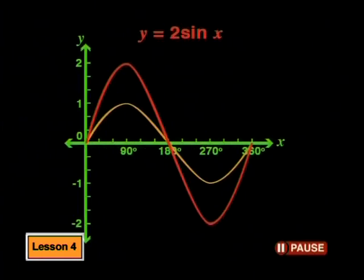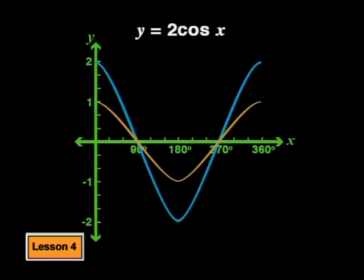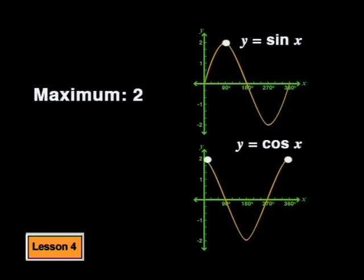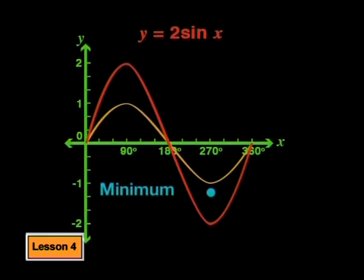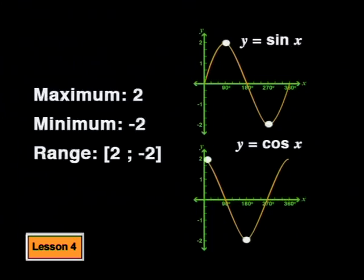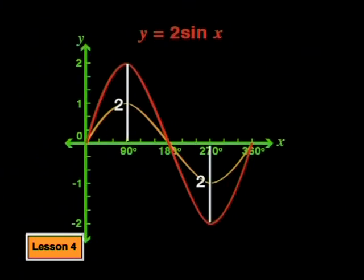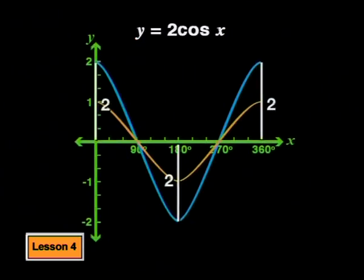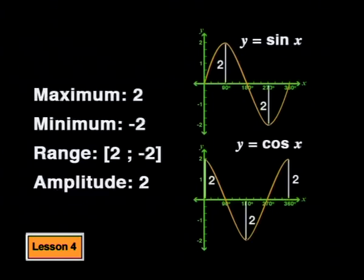Let's compare the two parent graphs with the new graphs. The maximum value has changed from 1 to 2 on both graphs, and the minimum value has changed from negative 1 to negative 2. So the range of both graphs is from negative 2 to positive 2. The amplitude of a graph is the maximum distance away from the x-axis, so both graphs now have an amplitude of 2.